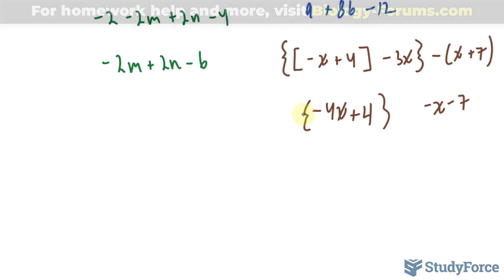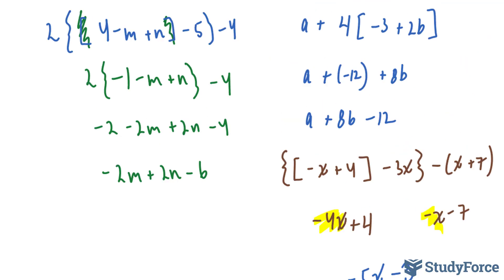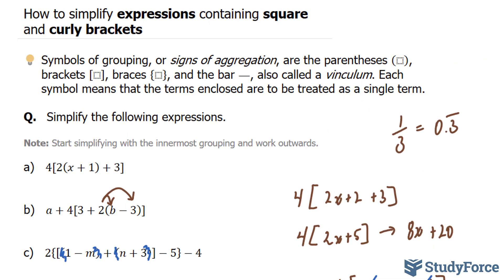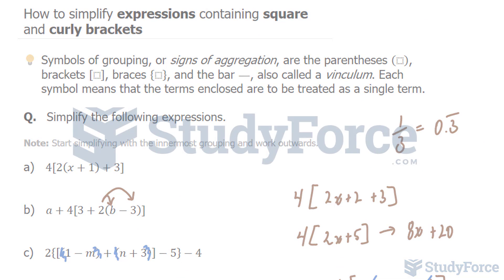Notice there's no factor in front of this bracket, so we don't need it. We can combine the rest: -4x and -x gives us -5x, and 4 with -7 is -3. That's the answer to question D. And that's how to simplify expressions containing square and curly brackets.